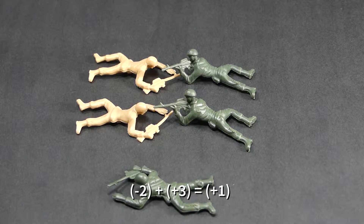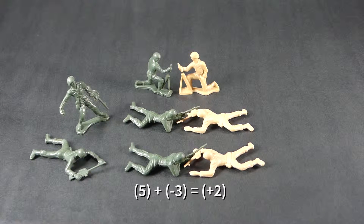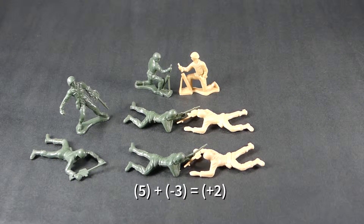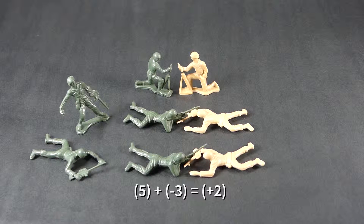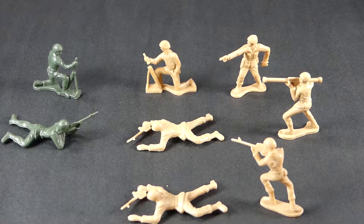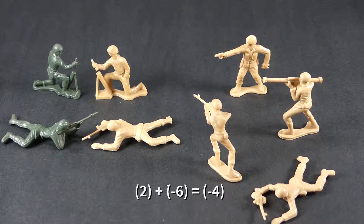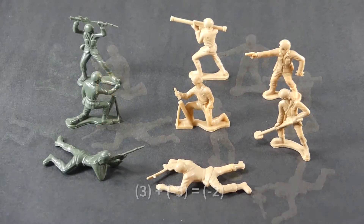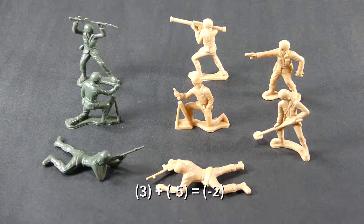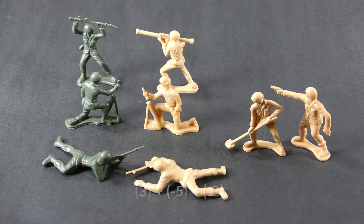In our next battle, we have positive five plus negative three. Because we have two more soldiers on the positive side, the answer is going to be positive — in this case, a positive two. Sometimes the negative soldiers are going to have the advantage. We have positive two but negative six; there are more negative soldiers, so the answer is negative four. The next problem: positive three plus negative five gives us two more negative soldiers, so the answer is negative two.